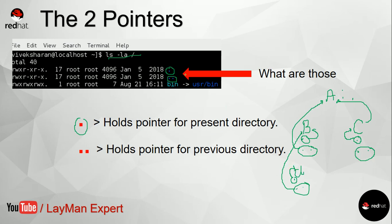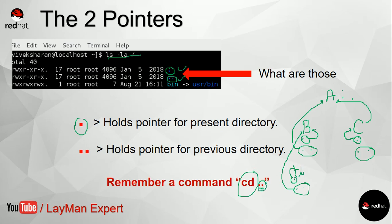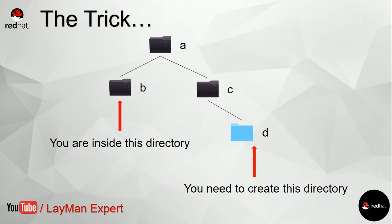This is the meaning of the two dots. I mentioned the command 'cd ..' in my previous video — that double dot is exactly what I just explained. When you say 'cd ..', it means change my directory to the parent of the current directory. If I am inside directory B and type 'cd ..', it means change my directory to the parent of B, which is A.